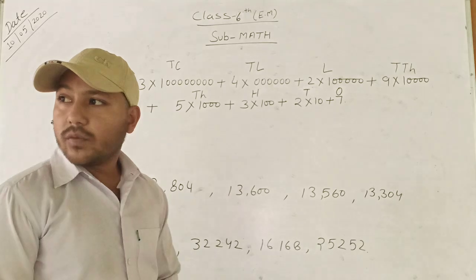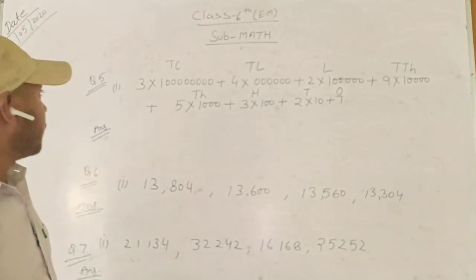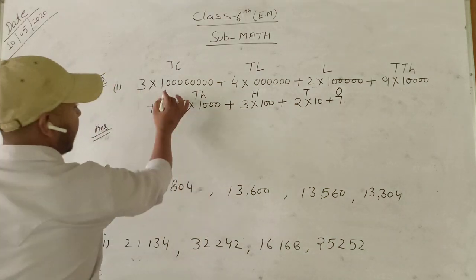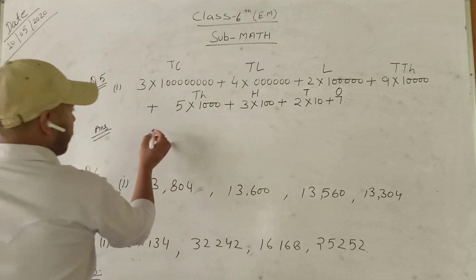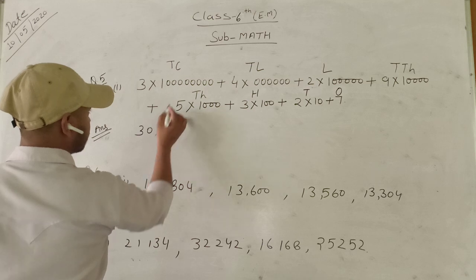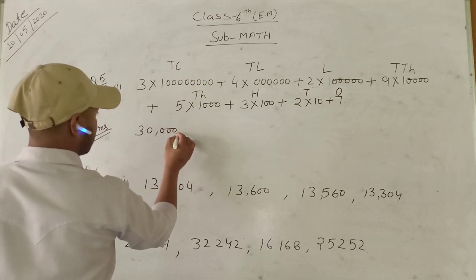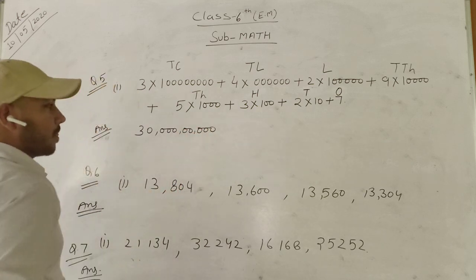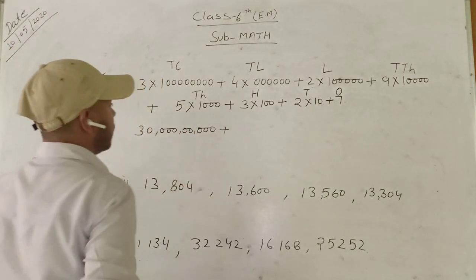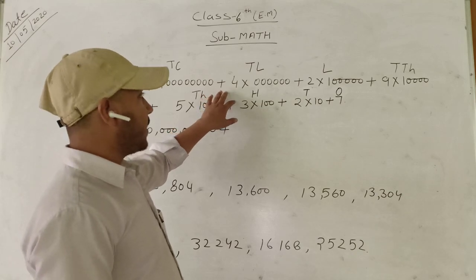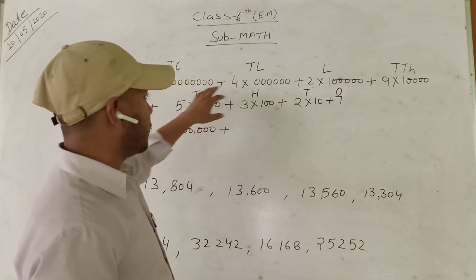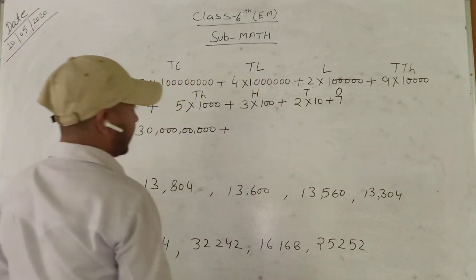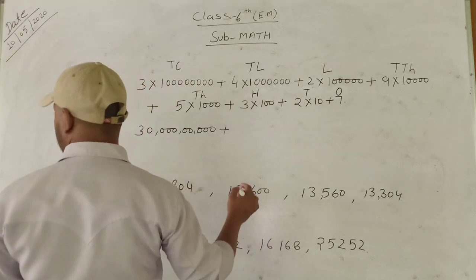So we are discussing question number 5. 3 multiplied by 10 crore makes the value 30 crore. According to the positions — 10, 100, 1000 — we multiply 4. We multiply 4 with 10 lakhs. So 4 multiplied by 10 lakhs is equal to 40 lakhs.